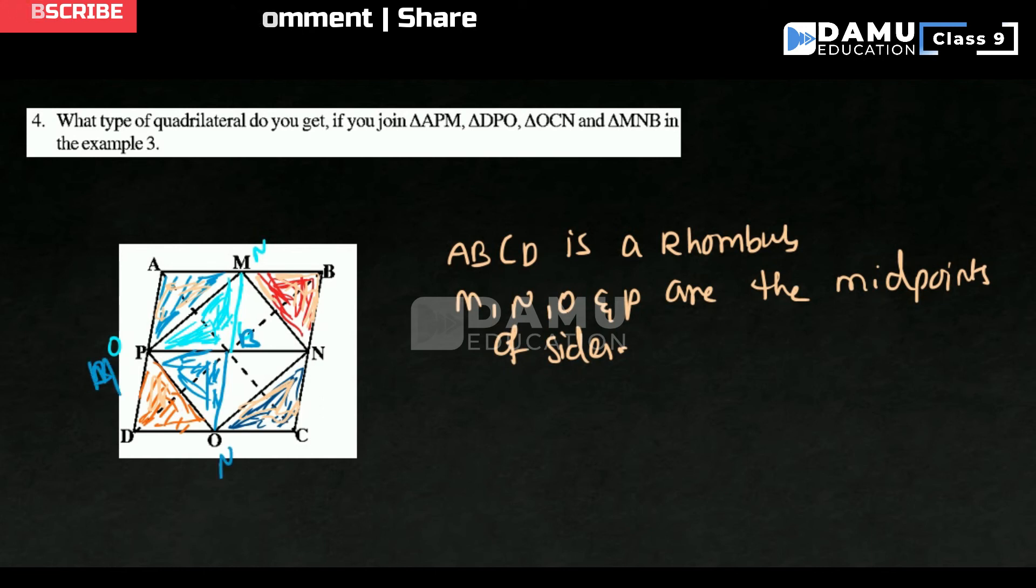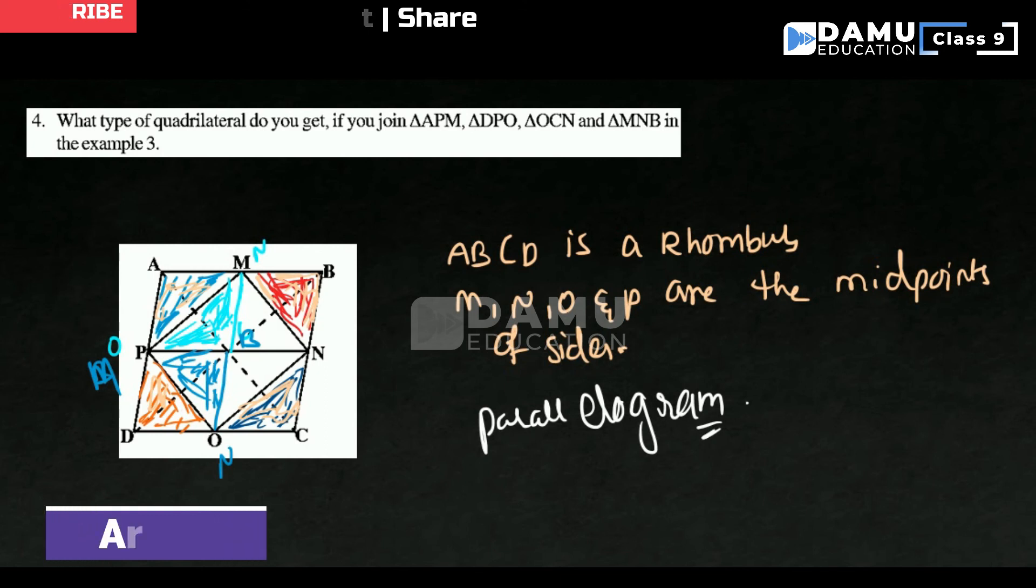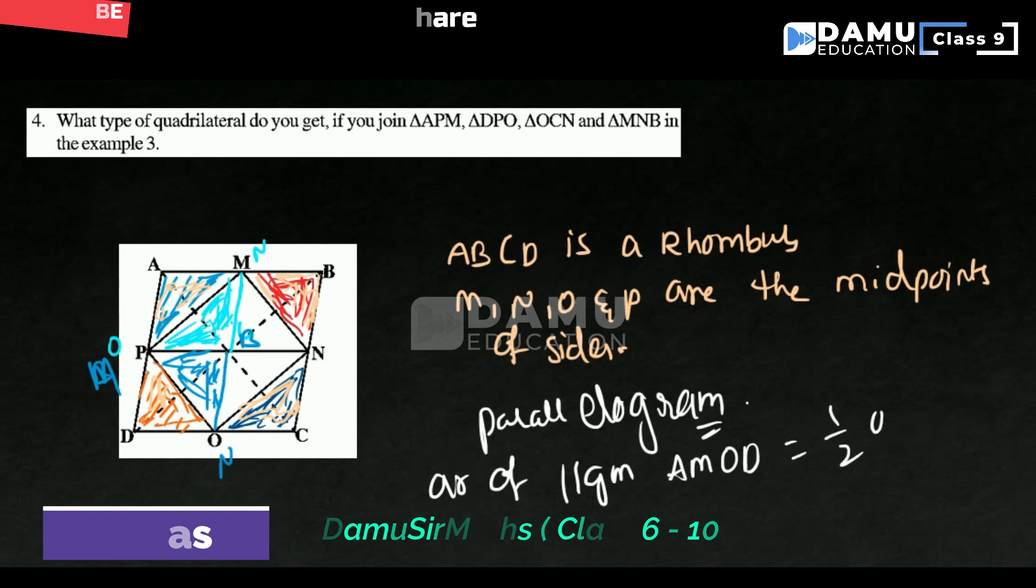So we are getting a parallelogram. The area of the parallelogram will be equal to half of the area of the rhombus.